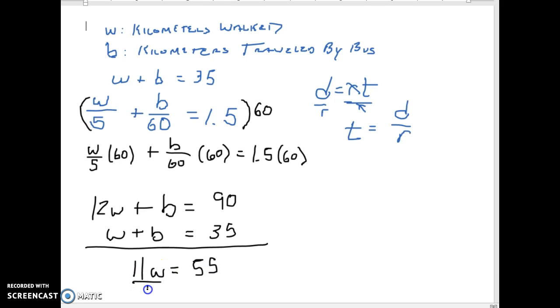So when I divide both sides by 11, I'll get that W, which is the kilometers walking, is 5. If W is 5, then B must equal 30.